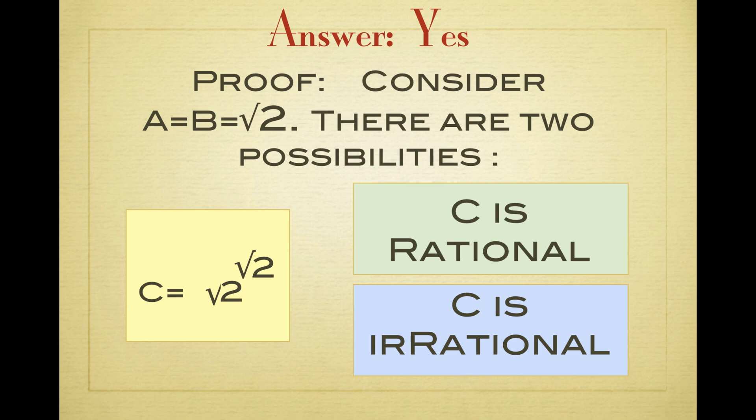So if c is rational, then we obviously have already found our example, namely a equal b is equal to square root 2 is the example we wanted.